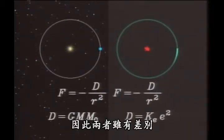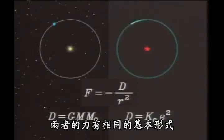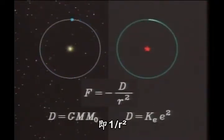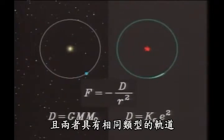So in spite of the difference between the two, both had forces of the same basic 1 over r-squared form, and both would have the same kinds of orbits.